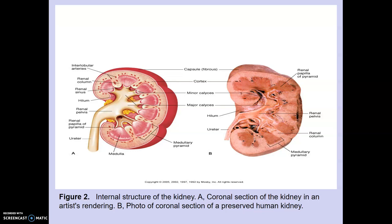Here we have both an artist's rendition and an actual cross-section through a preserved kidney. The renal capsule is a fibrous connective tissue that holds the kidney together. The renal cortex has a columnar organization — you can see that it looks like columns. The renal medulla is in here, separated into renal pyramids, which are much more clearly visible in the artist's rendition. Separating the renal pyramids are the renal columns, which also look somewhat cortical and contain blood vessels — visible in both the drawing and the preserved tissue.